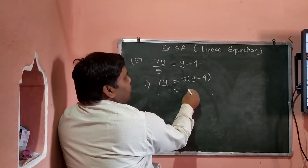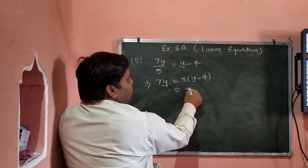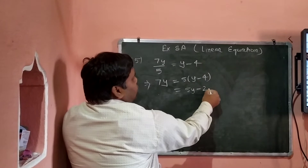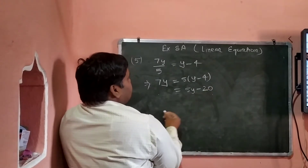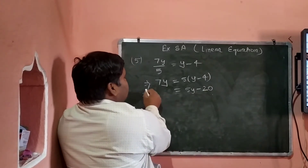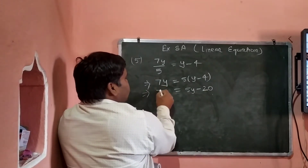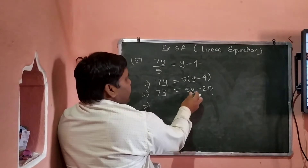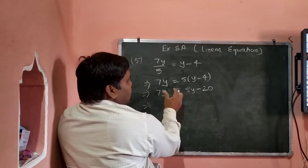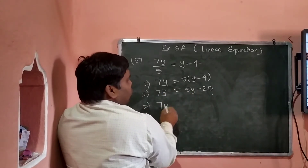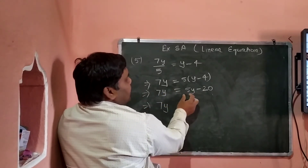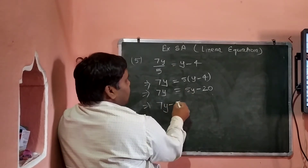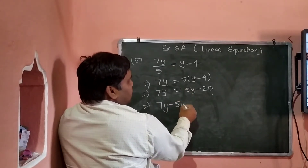इधर 5 into y = 5y, और 5 into 4 = 20। अब यह 5y को इस तरफ लाएंगे — तो इसके आगे sign नहीं है और इसके plus है, इस तरफ आएगा तो minus हो जाएगा।